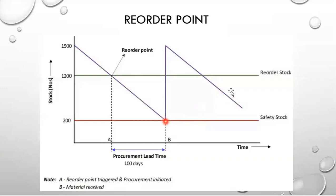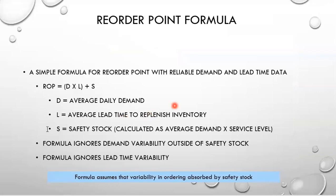In the real world, inventory will rarely hit exactly the safety stock level — it'll hit nearby. The reorder point formula is fairly simple: we take the average daily demand and multiply it by our average lead time.